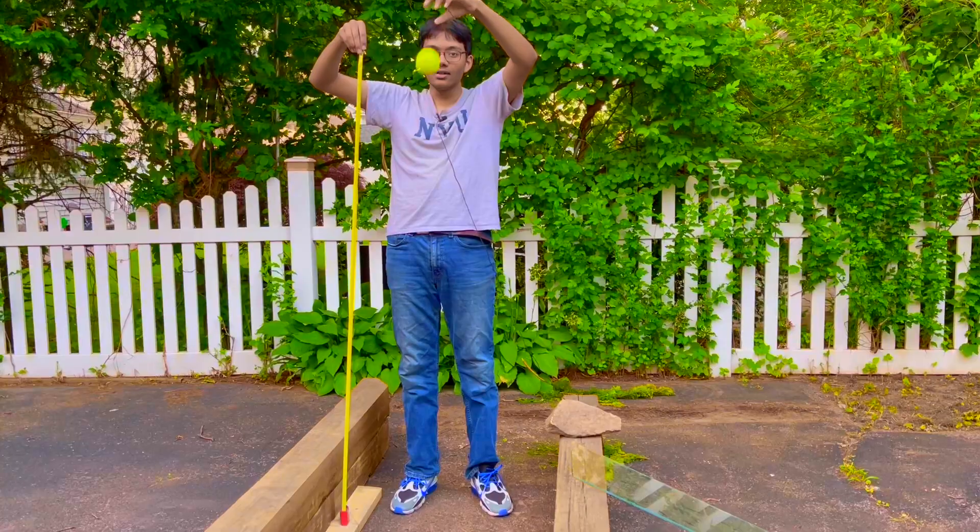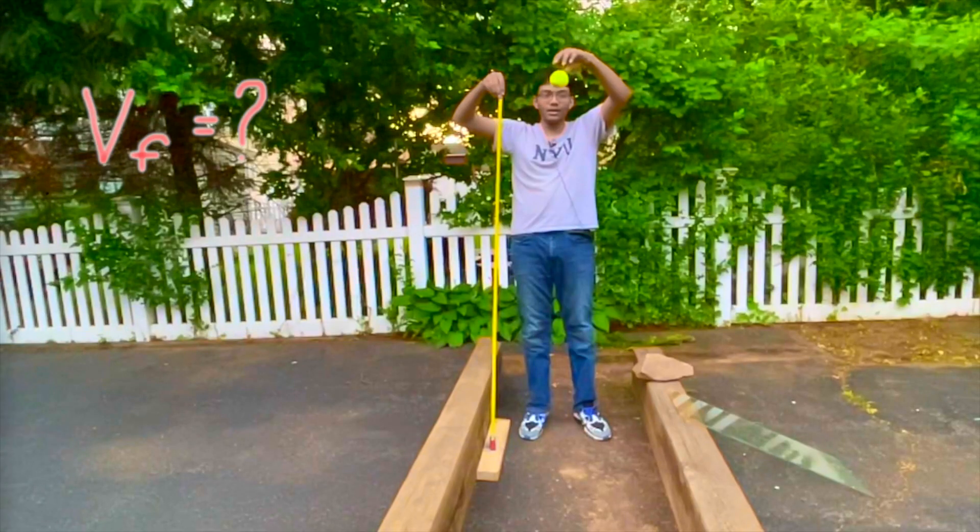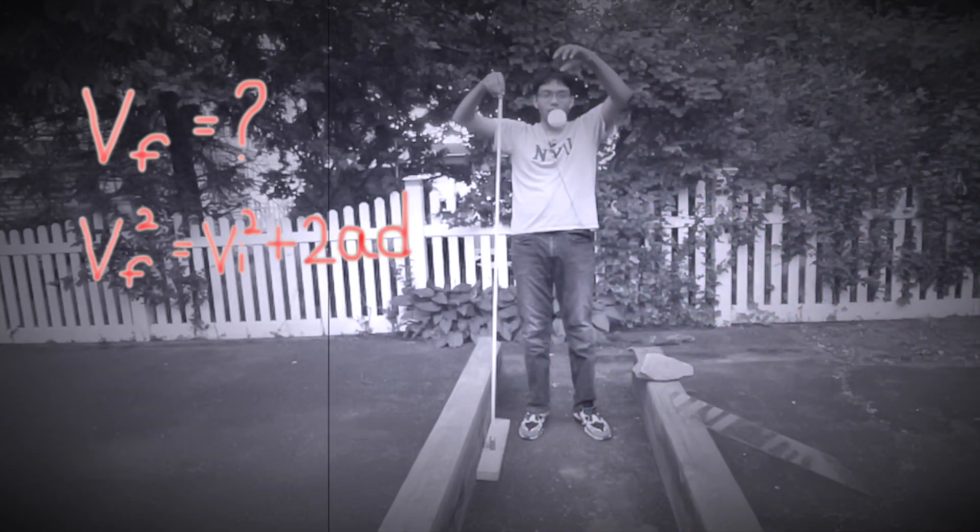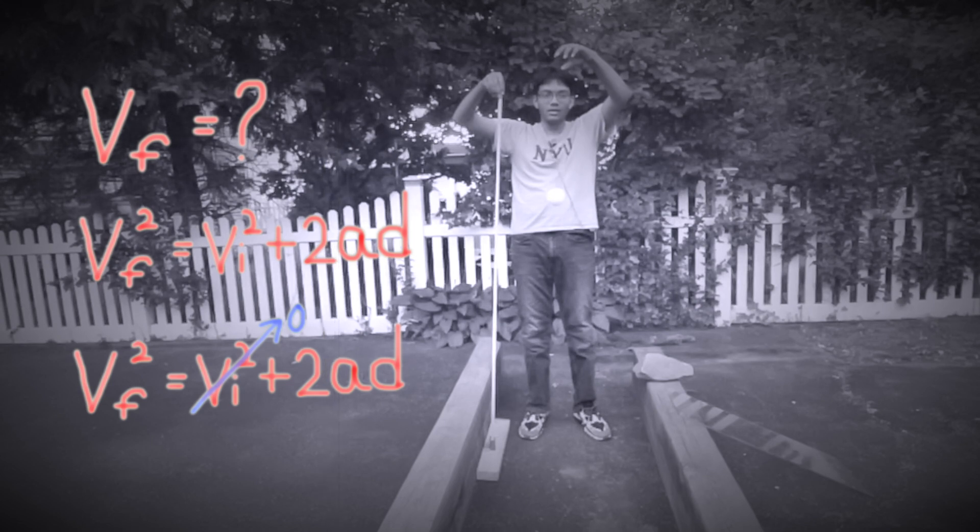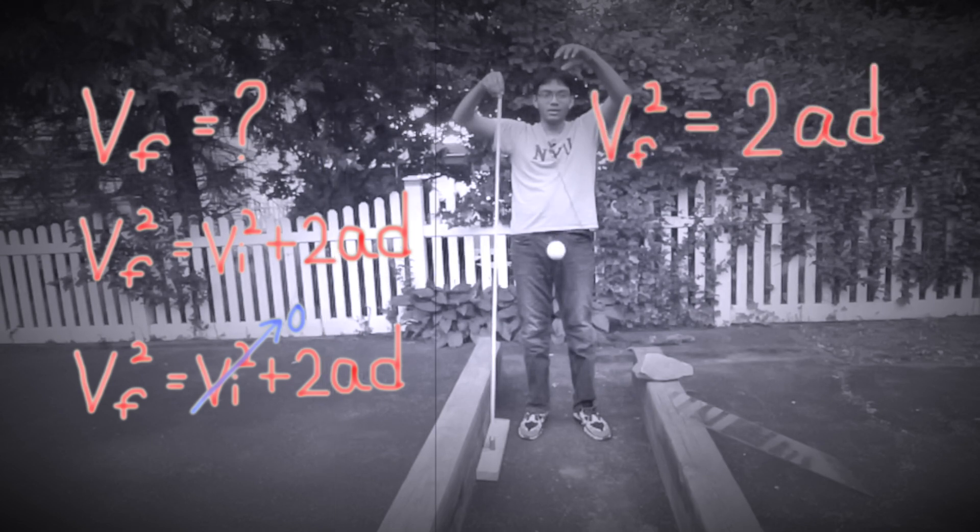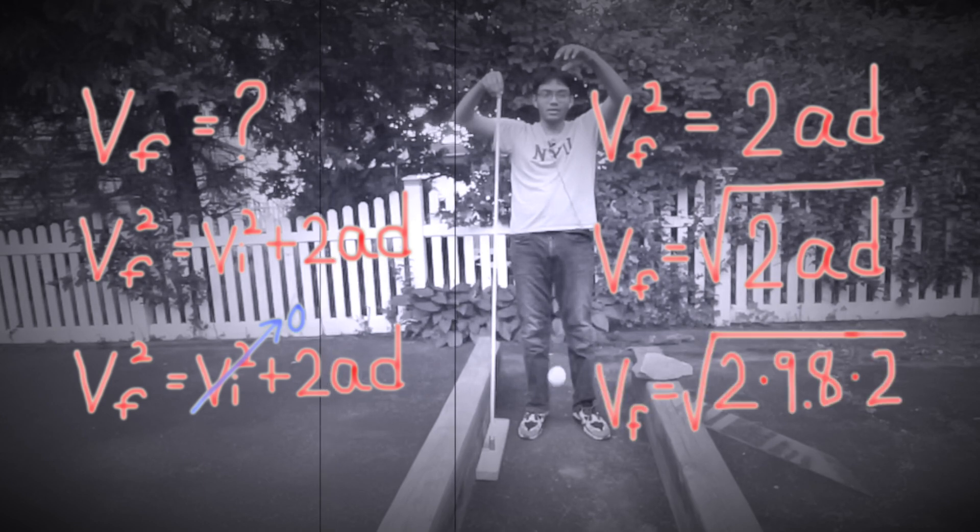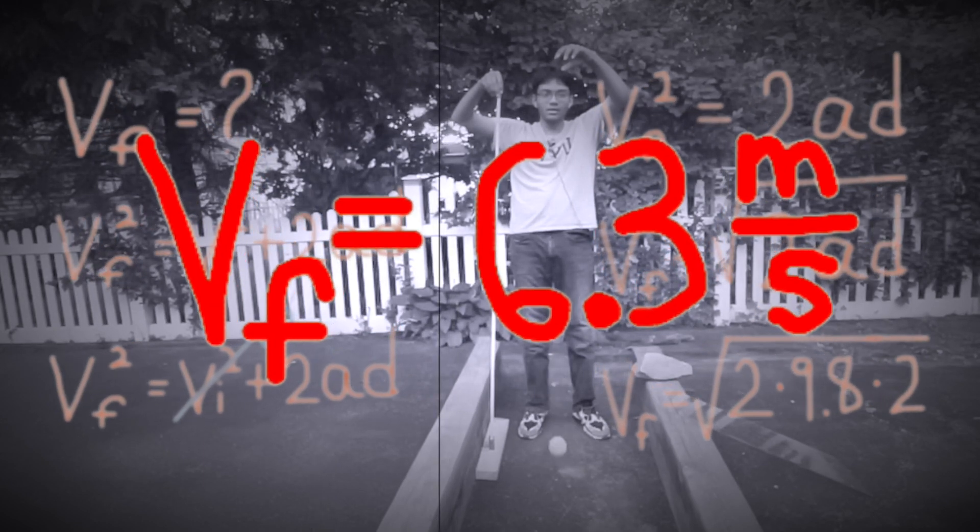Three, two, one. To find the final velocity, we use the kinematic equation Vf² = Vi² + 2ad. But the initial velocity is zero, so we have Vf² = 2ad, and Vf is the square root of 2ad. Plug in the values, and you get the final velocity is 6.3 meters per second.